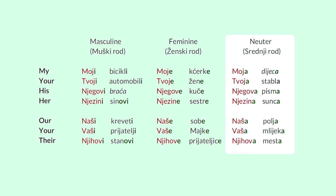In the neuter gender you will need to change E or O into an A. Моје дете will change into Моја деца — деца is also an exception here, it's changing phonetically. My kids — Моја деца. Твоја стабла — your trees. Негова письма — his letters. Незина сунца — her suns. Наша поле — our fields. Ваша млека — your milks. Нихове места — their places.